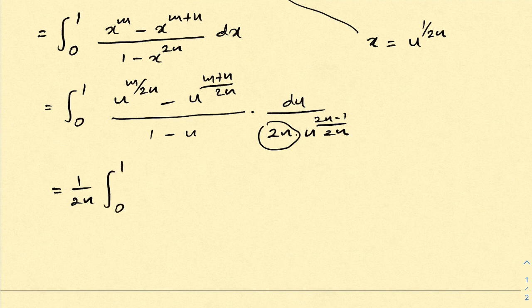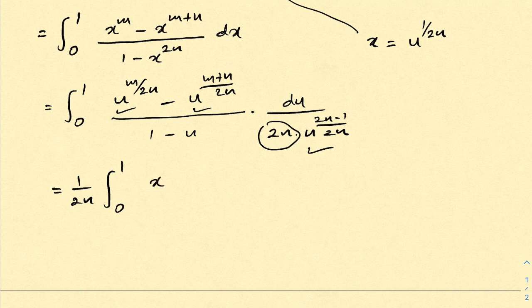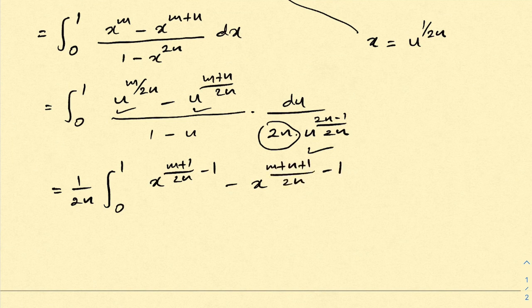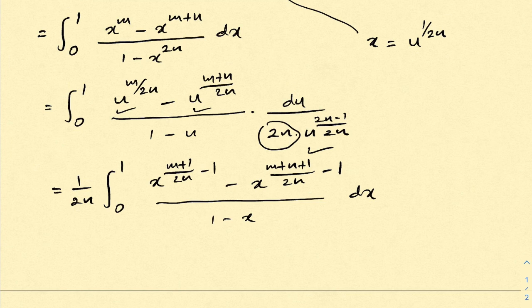So we have 1 over 2n times the integral from 0 to 1. After simplifying the powers of u, we get u to the m plus 1 over 2n minus 1. Changing the variable back to x, we write x to the m plus 1 over 2n minus 1, minus x to the m plus n plus 1 over 2n minus 1, all over 1 minus x, times dx.